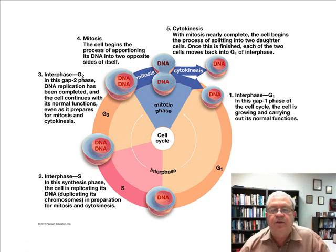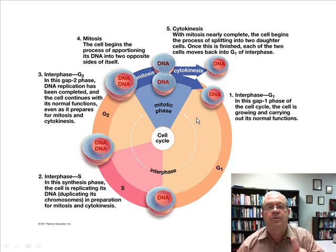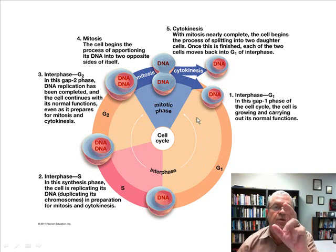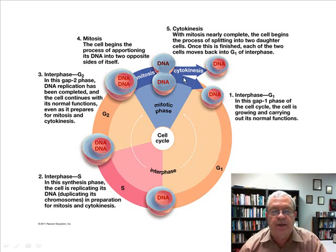When does DNA replication occur during the cell cycle? Here's the cell cycle. Most of it is interphase — this is the cycle by which one cell becomes two, two become four, etc. Most of it's interphase, and there's mitosis and cytokinesis.